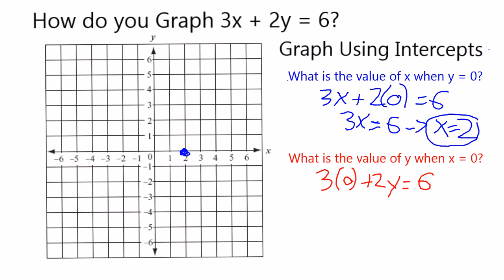When x is equal to 0, we're left with 2y equals 6, or y itself is equal to 6 divided by 2, which is 3. And we can graph that when x is 0, y is equal to 3.